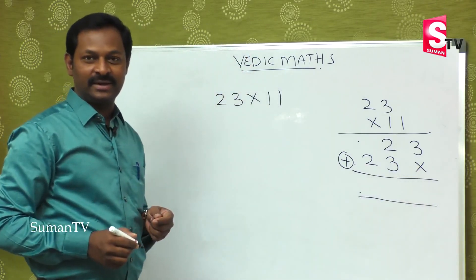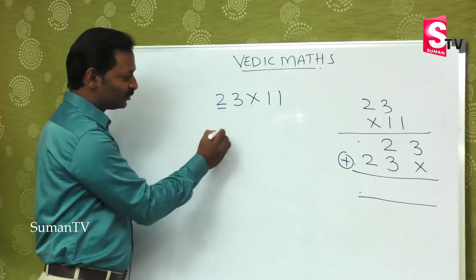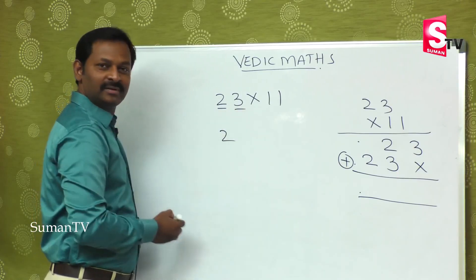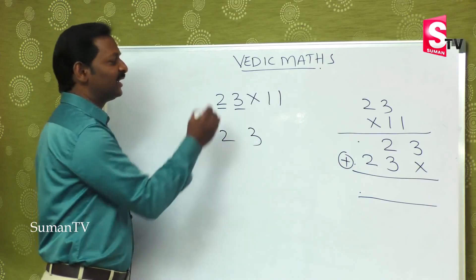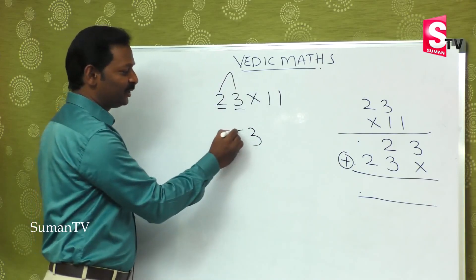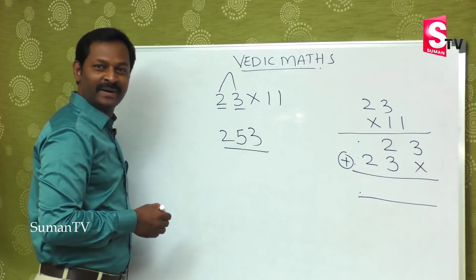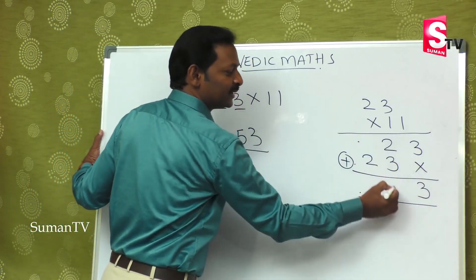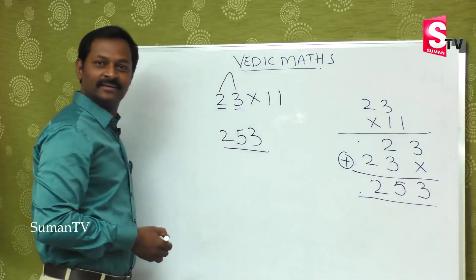Now with the shortcut: what is the first number? 2. What is the last number? 3. Add them for the middle: 2+3=5. Put 5 in the middle. So the answer is 253. The first and last digits stay the same, and you add them and place the result in the middle.